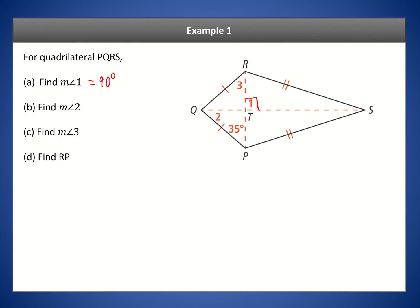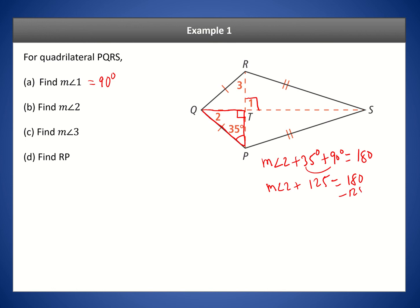For angle 2, we know one angle is 35 degrees and the diagonal intersection gives a 90-degree angle. Since the angles in a triangle add up to 180, we get: angle 2 + 35 + 90 = 180. Since 35 + 90 = 125, we subtract to get angle 2 = 55 degrees.